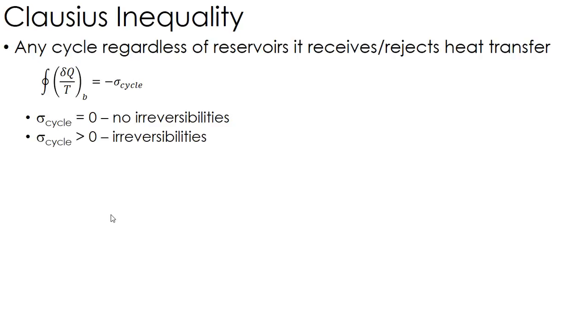If it's greater than zero, and again, notice the negative sign in the equation. But if sigma is greater than zero, that is kind of a real system. That's when we have irreversibilities.